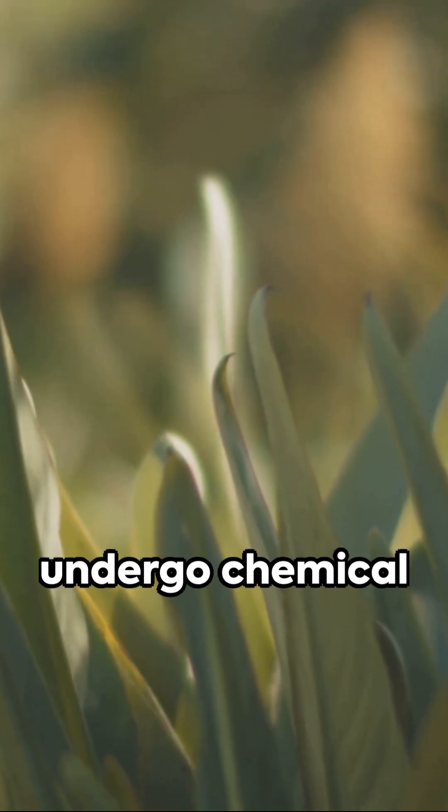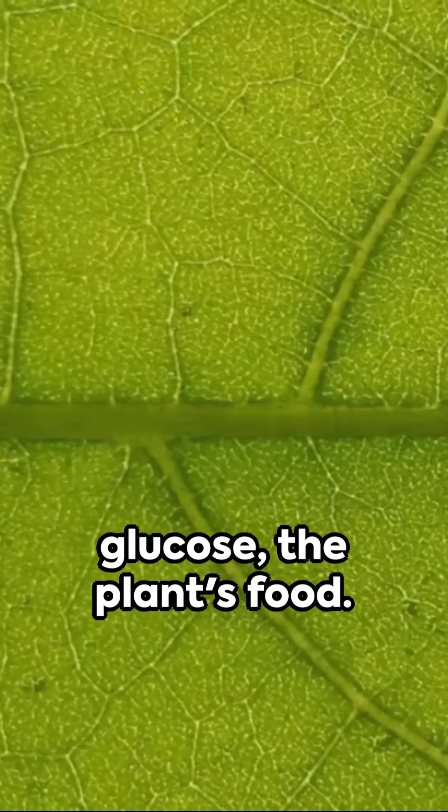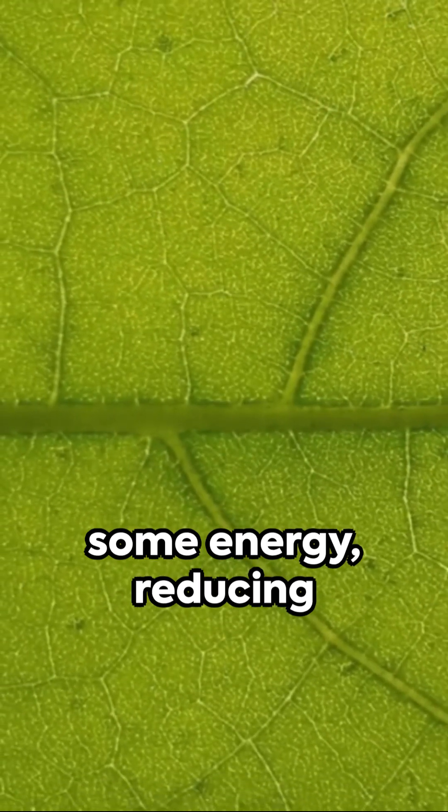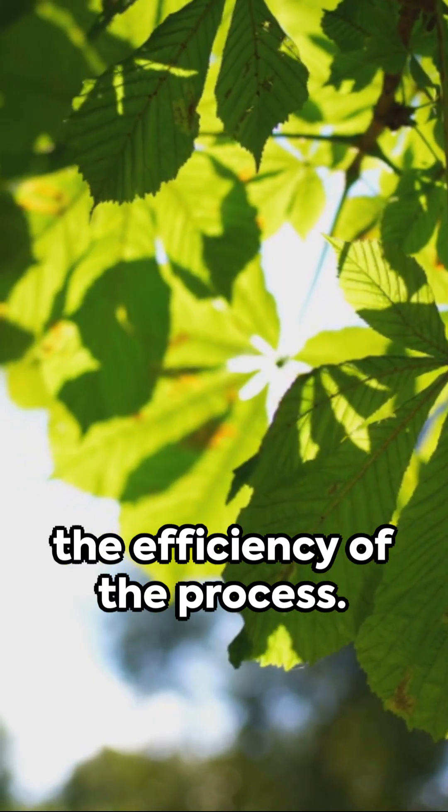The energy-rich molecules must undergo chemical reactions to generate glucose, the plant's food. Each reaction loses some energy, reducing the efficiency of the process.